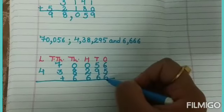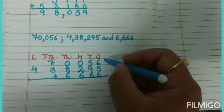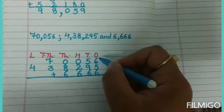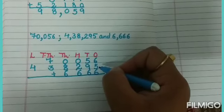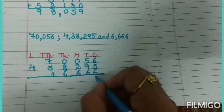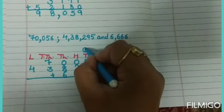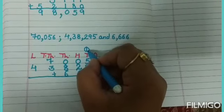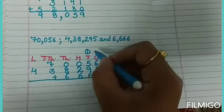After arranging these numerals, we will add from ones place. 6 plus 5 equals 11, 11 plus 6 equals 17. Write 7, carry over 1.